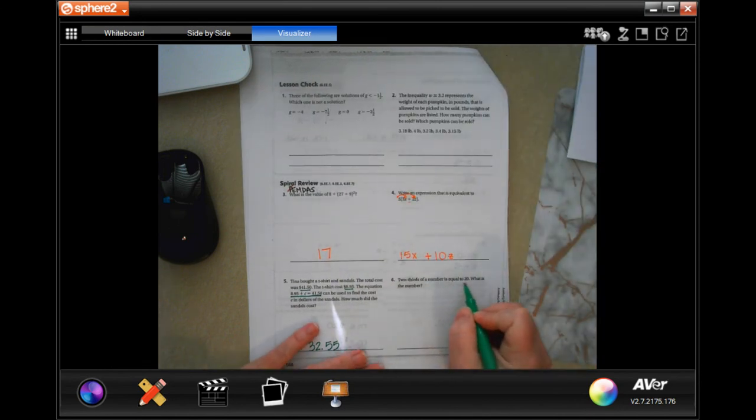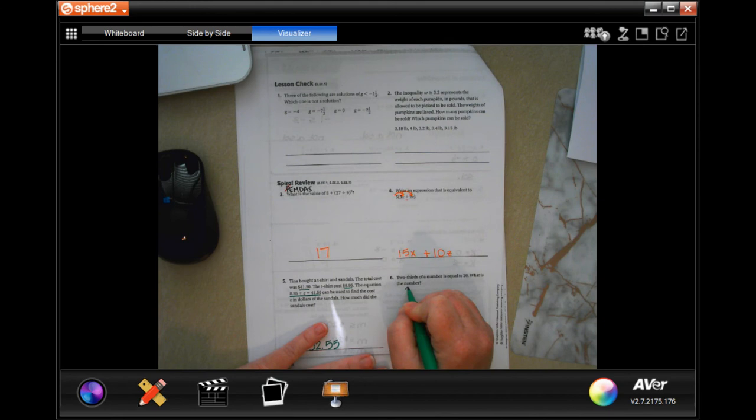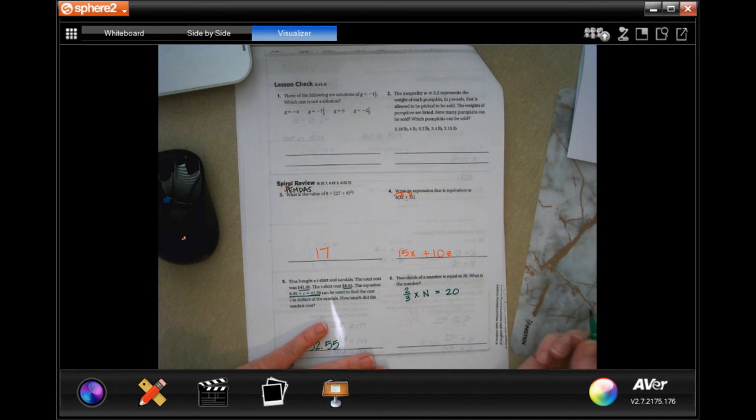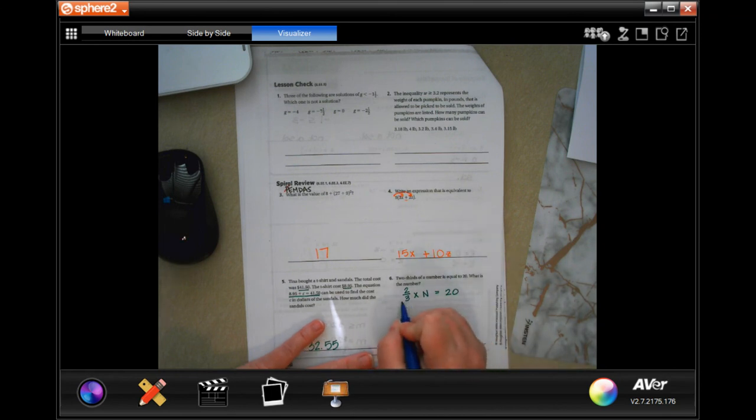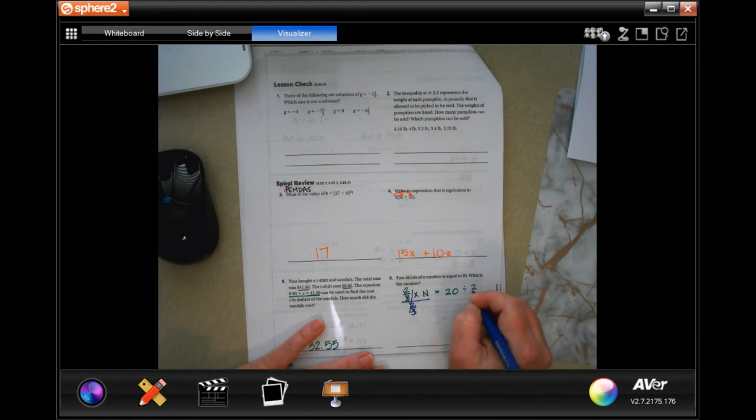2 thirds of a number is equal to 20, what's the number? Well, 2 thirds of a number is 20. I could have just put 2 thirds in, I put a multiply, see that we were going to be doing divide for the opposite, so that they would cancel out. I'm going to rewrite that one, keep, change, flip. 2 goes into 2, 1, 2 goes into 20, 10 times, 10 times 3 is 30, over 1, my answer is 30.